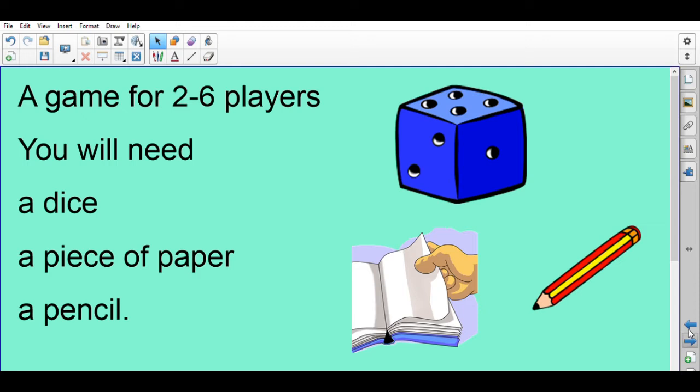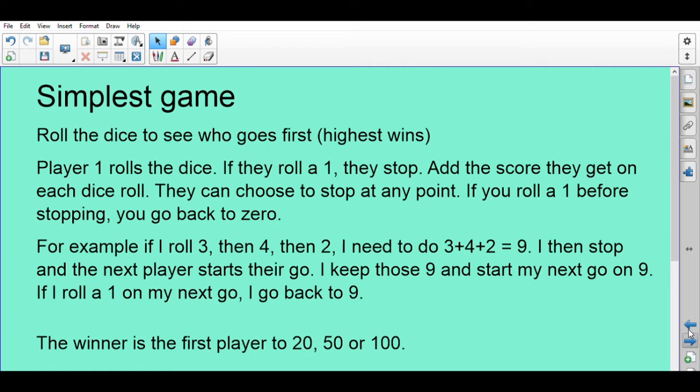Let's have a look at the rules of the game. There are lots of variations in this game. You can play a really simple game which we'll look at, and then you can make the game much harder in different ways, but the principle of the game is the same. To start with, roll the dice to see who goes first - the highest wins. But if in your family you've got a different way of deciding who goes first in dice games, please use that.